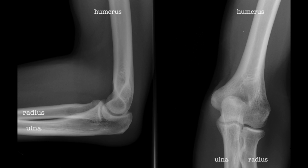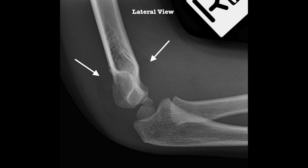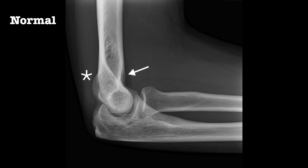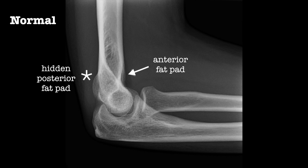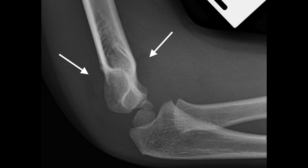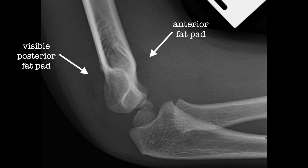Always request AP and lateral x-rays and look for the fat pad sign. Normal lateral views show a fat pad anteriorly, while the posterior fat pad is usually not visible as it is hidden behind the intercondylar fossa. Notice in this x-ray that the anterior fat pad is elevated and the posterior fat pad is visible.